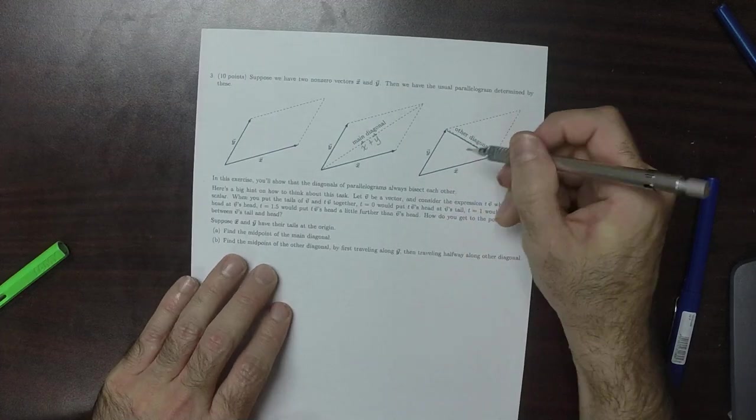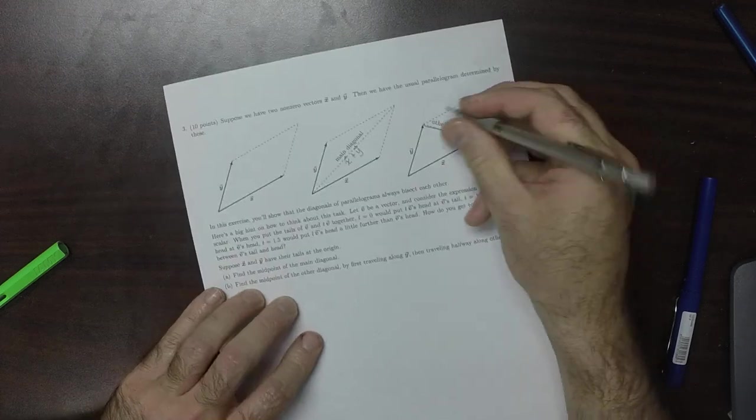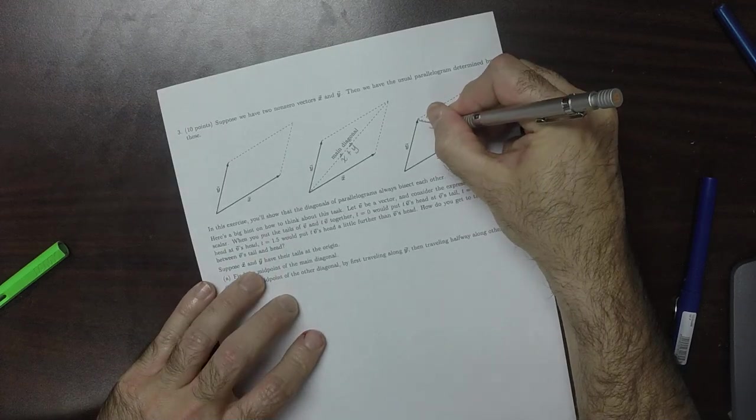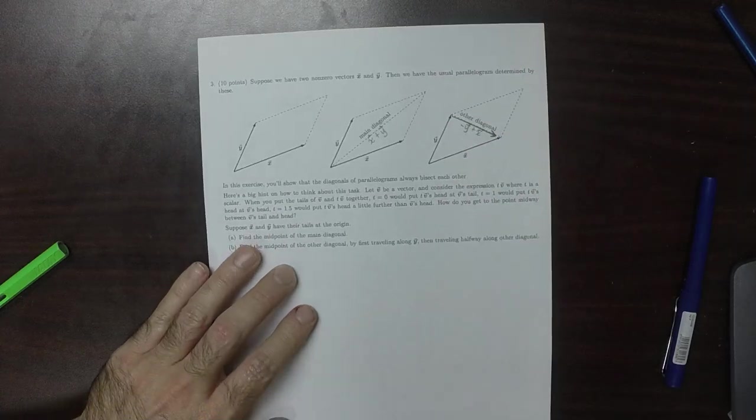So then to do this, we'll do negative y plus x. So this is, so this other diagonal is negative y plus x.